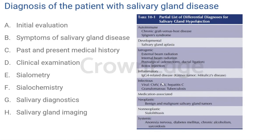Systemic diseases such as diabetes, salivary gland masses, and psychological conditions such as depression and anxiety can also cause chronic hyposalivation. The major symptoms the patient will report include difficulty in chewing, swallowing, and speaking; a burning sensation in the mouth; chronic sore throat; sensitivity of the mucosa to spicy food; and difficulty swallowing, which may compromise nutrition.